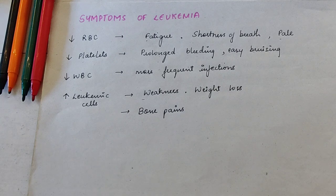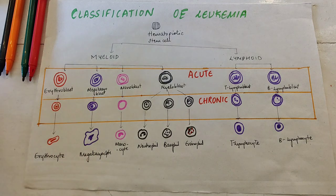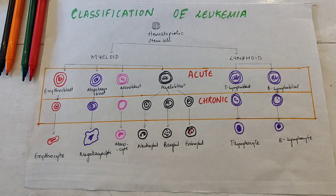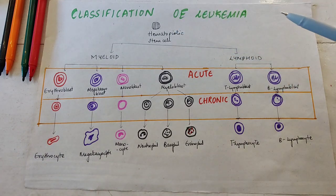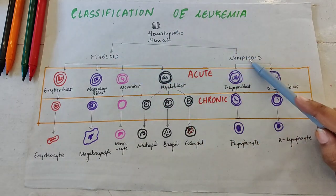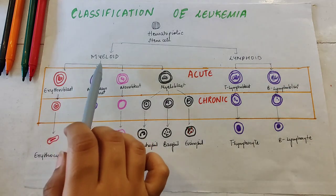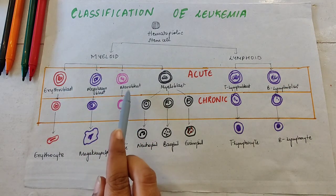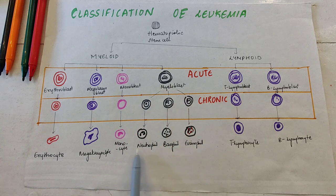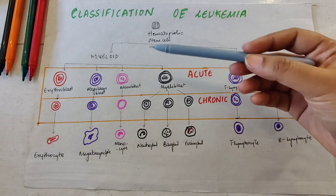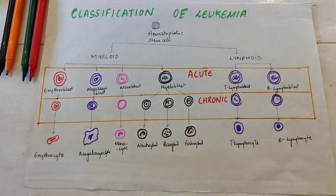So this is the broad spectrum of symptoms of leukemia. Classification of leukemia — I bet you might have seen this diagram a lot in this hematology series. As we know, there is a hematopoietic stem cell which is later categorized into myeloid and lymphoid. In myeloid we see erythroblast, megakaryocyte, monoblast, myeloblast — which includes neutrophils, basophils, eosinophils — these are the developmental stages of both myeloid and lymphoid cells.